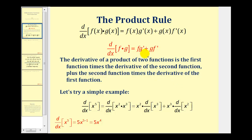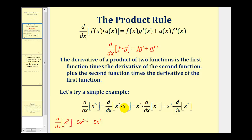I did make a video that proves the product rule, but let's start by looking at a simple example. We know the derivative of x to the fifth, applying the power rule, would be five x to the fourth. But if we wanted to, we could write x to the fifth as a product of two functions — we could write this as x squared times x to the third.